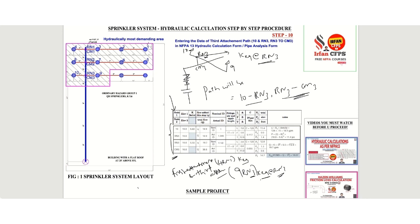In this slide, we are going to calculate the path 10 to RN3 and RN3 to CM3, and we ignored the second attachment path. Why? Because these two paths are typical. So that is the reason we ignored. So the K factor at CM2 will be same as K factor at CM1 since both are same. So that is the reason we ignored that one.